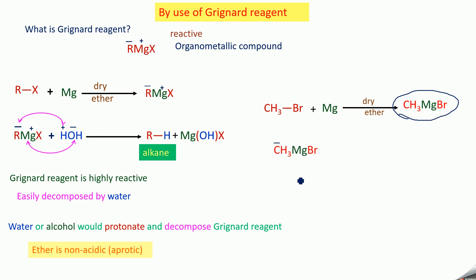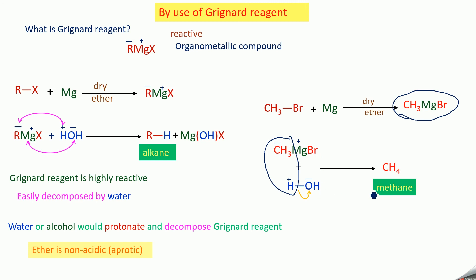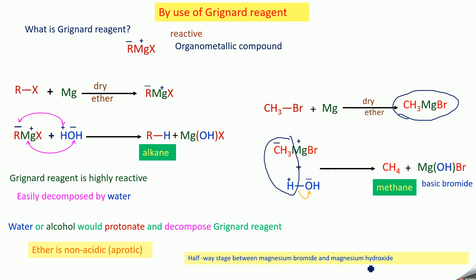Methyl magnesium bromide on treatment with water: CH₃ (negative charge) and H⁺ combine to form methane, and Mg, Br, OH combine to form Mg(OH)Br — called basic bromide. It is a halfway stage between magnesium bromide and magnesium hydroxide. This is how you prepare an alkane from Grignard reagent.